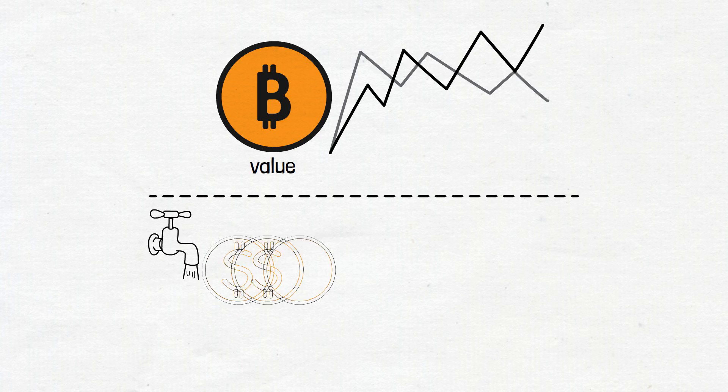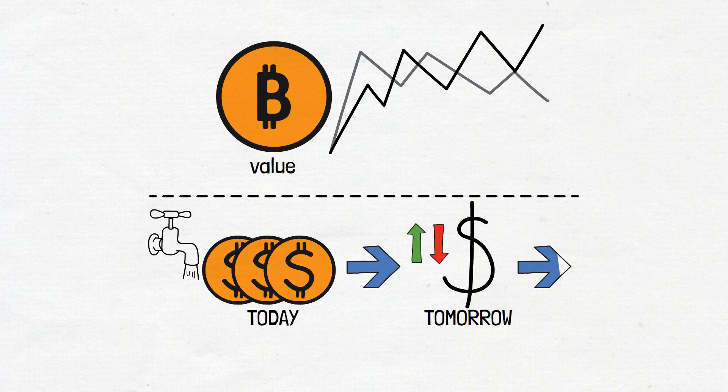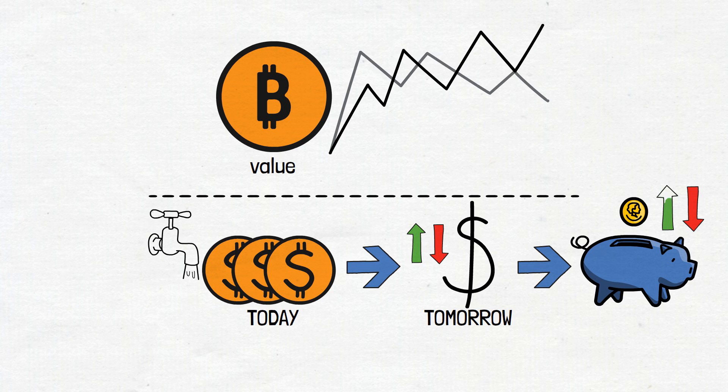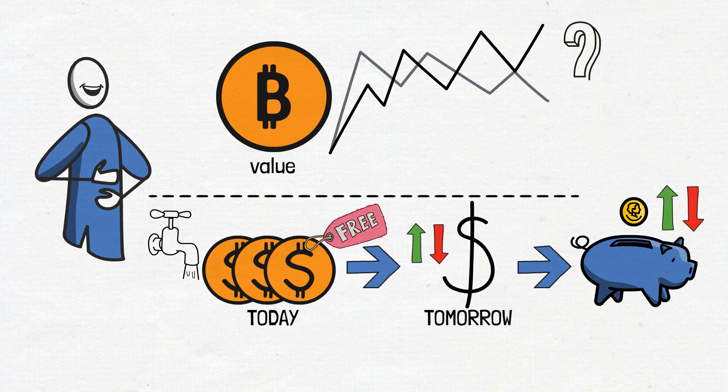Oh, and one more thing. Since the value of Bitcoin can change like the weather, what you earn from faucets today might be worth more or less tomorrow. You'll basically have a piggy bank that might grow or shrink in value overnight. So, while it's fun to earn Bitcoin for free, its value can be a bit unpredictable. But hey, here's the silver lining.